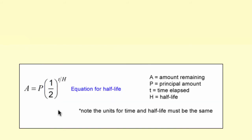It's a very simple formula for half-life. P is the principal amount or initial amount of the radiation. The one-half is the decay factor. The t is the time elapsed, and the h is the half-life—the number of years it takes for half of the material to decay.